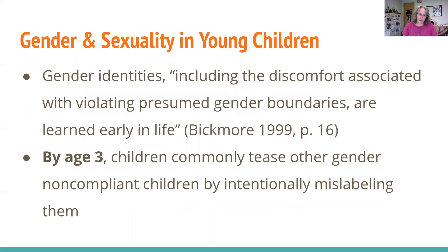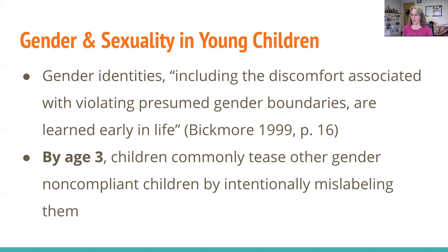Understanding gender and sexuality in young children includes the discomfort associated with violating presumed gender boundaries, which are learned early in life. By age three, children commonly tease other gender non-compliant children by intentionally mislabeling them — they might be called gay, or a girl playing with boys might be called dyke. But at this early stage it's not about homophobia; they're using those words to police what is considered normative, teasing, taunting, and even bullying. It's more about their understandings of gender than sexuality.